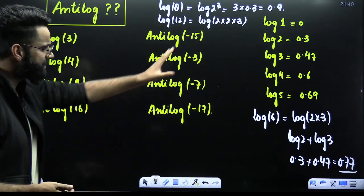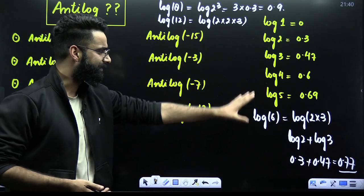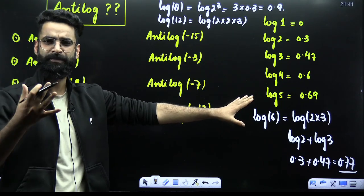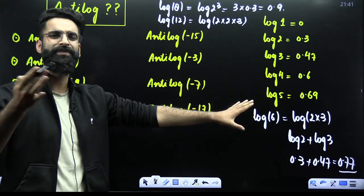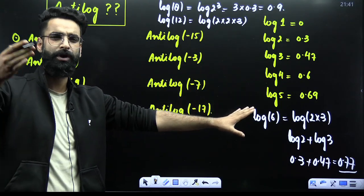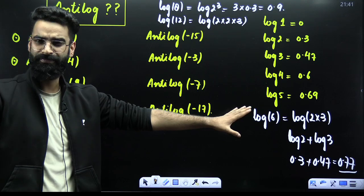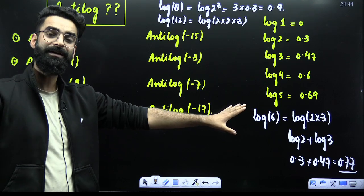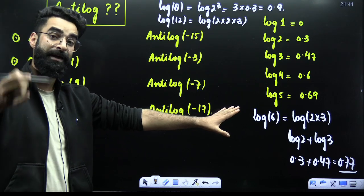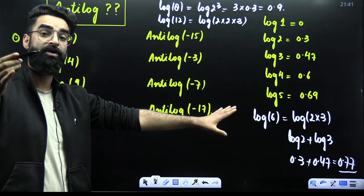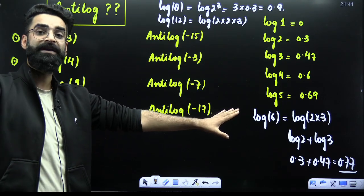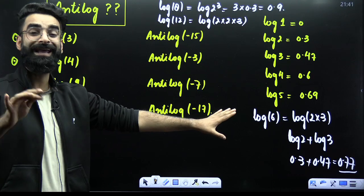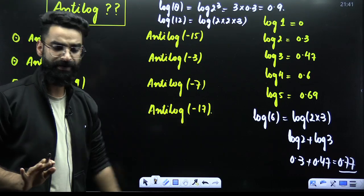Now, leaving the logarithmic values aside, these can be solved with a few logarithmic properties. Log of M × N equals log M plus log N. Similarly, log of M/N equals log M minus log N. And log of M raised to the power N is nothing but N × log M.